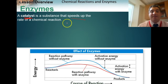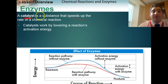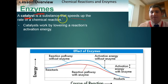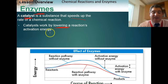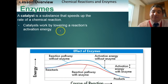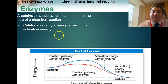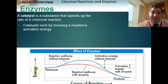A catalyst is any substance that speeds up the rate of a reaction. In biology, we talk about enzymes — enzymes are specifically catalysts in our bodies that make chemical reactions go faster. The way enzymes work is they lower a reaction's activation energy, reducing the amount of energy needed to start the reaction.